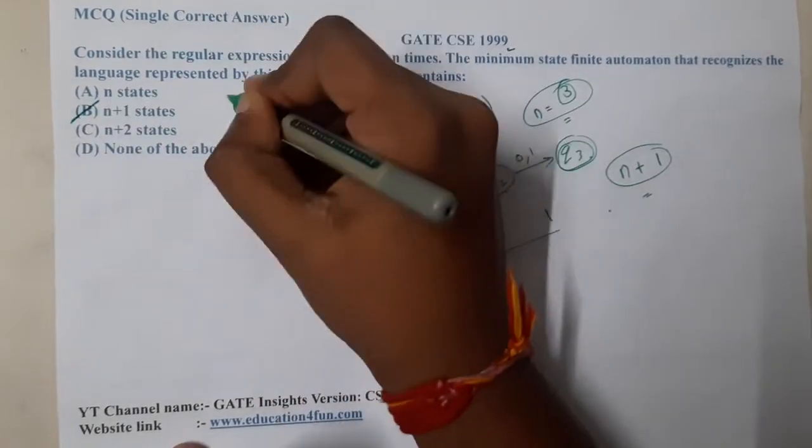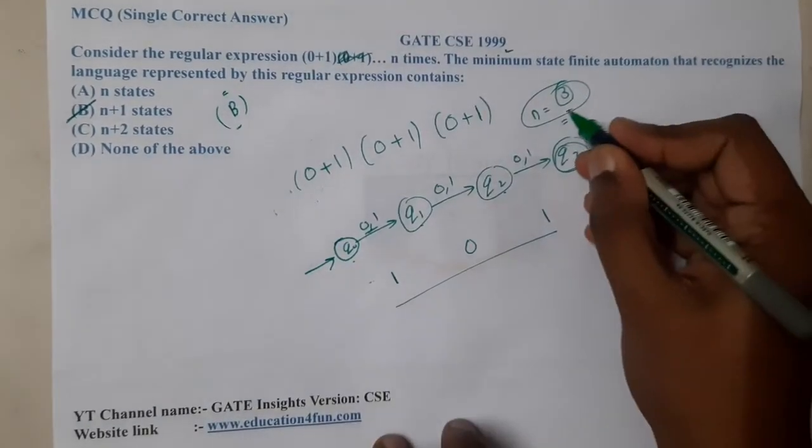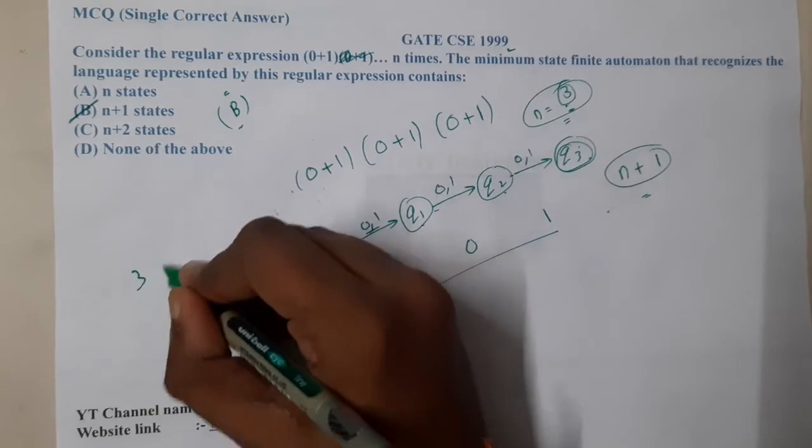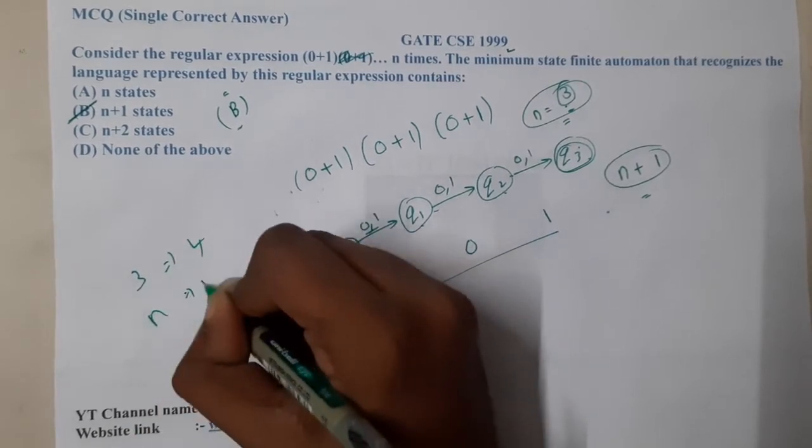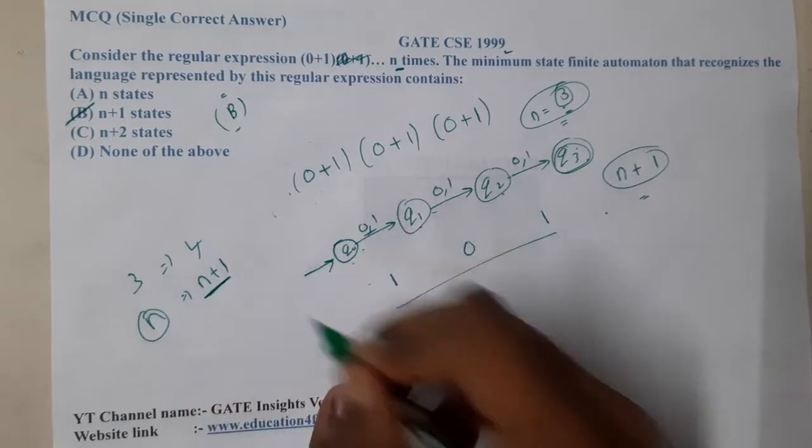So n+1 is the correct answer - option B is the most appropriate answer. For three numbers we need four states, so for three we need four, for n we need n+1. Basically, for n digits or n items we need n+1 states.